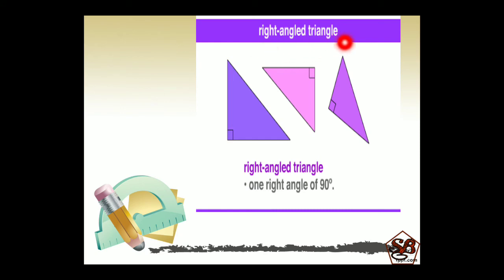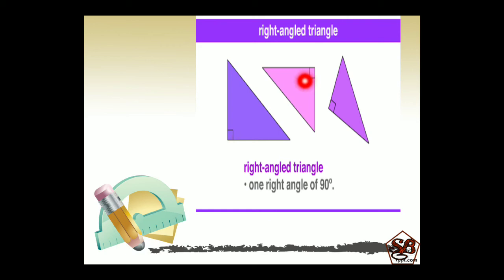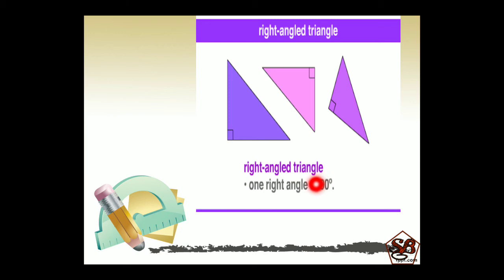Right angled triangle. A right angled triangle has one right angle of 90 degrees. You can see there is a small box which indicates that it is a right angle — one right angle in this triangle, one in this one and one in the third triangle as well. A triangle can have only one right angle in it. Such types of triangles are called right angled triangles or right triangles.